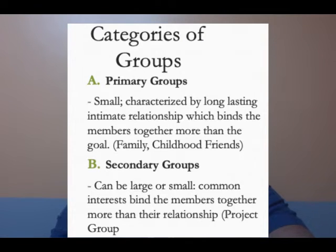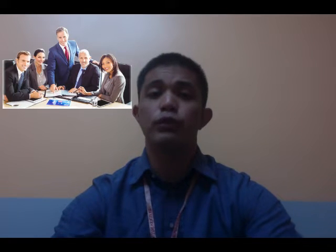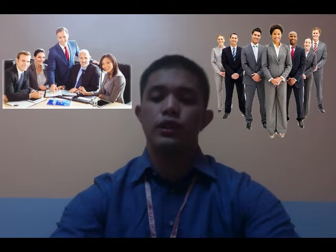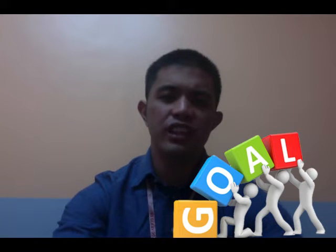Secondary groups can be either large or small, but they are commonly large. Common interests bind these members together, and the goal is more important than the relationship. Classic examples include a group of laborers, workers, organizations, or a project group. They focus not on maintaining relationships but on achieving their goal. Relationships here are very short-term and impersonal — very formal — and are usually found at school, at work, or in interest clubs.